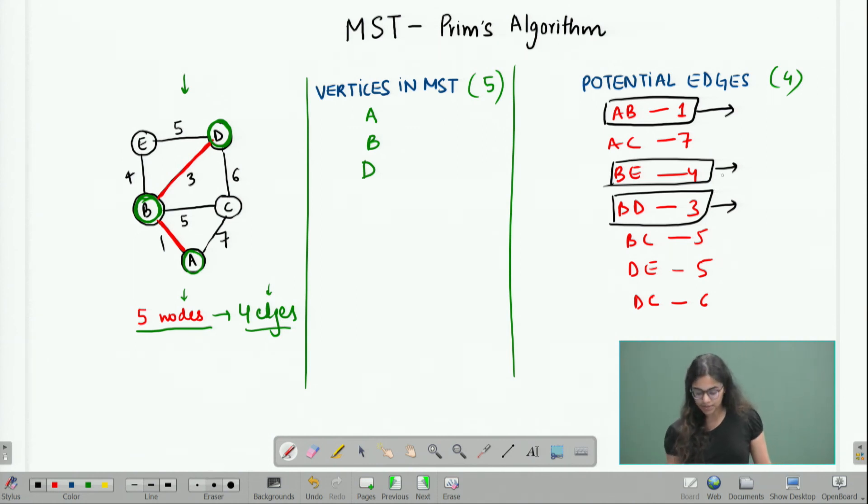Our aim here is to include more and more vertices into my MST. By choosing BE, what I am doing is I am adding the vertex E to my MST, so my aim is getting fulfilled. As soon as I add this edge to my MST, I am including the vertex E, so I should write down E here and I should list down all the potential candidates but the only edge that is left for E is ED which has already been listed down here.